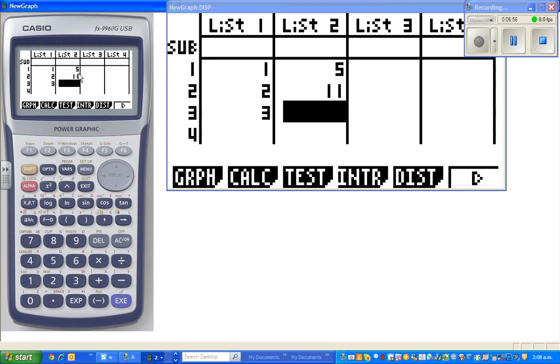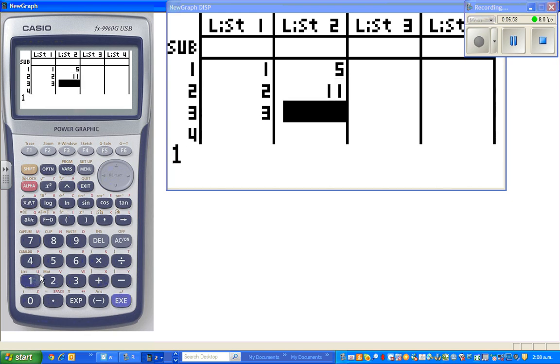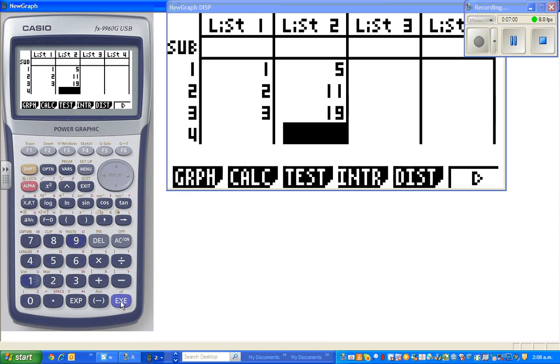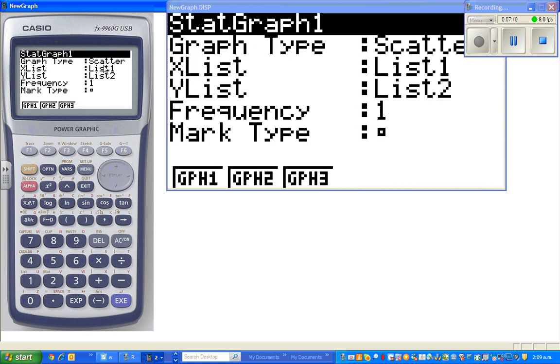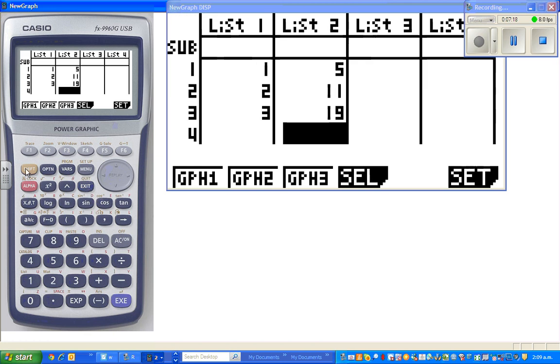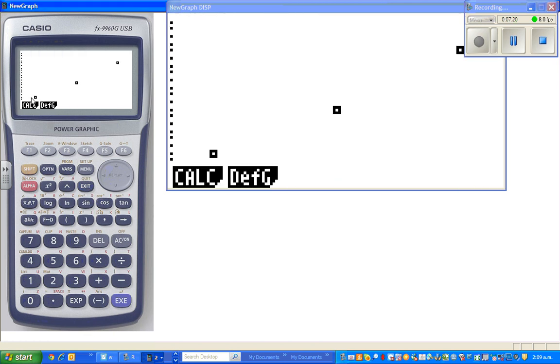And 11 plus 8 is 19. So first you enter this. And then you have to graph it. So what I'm going to do is draw the scatter plot. So I'll go to graph and look at the setup. Your x list is in list 1 and your y list is in list 2. Then graph it.